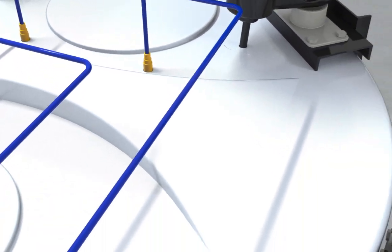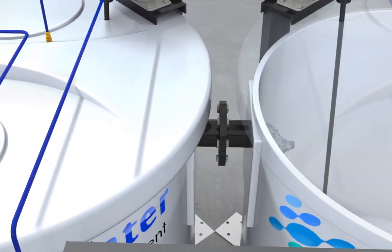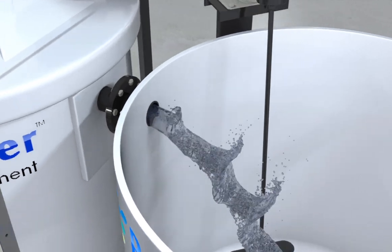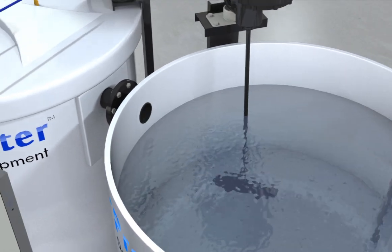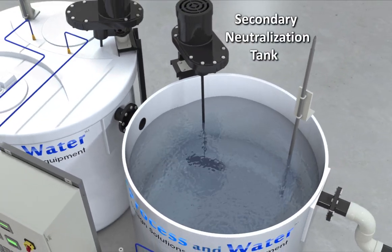As the water solution mixes together, it eventually cascades from stage 1 pH to stage 2 pH, where the mixer continues to agitate the solution within tank 2.